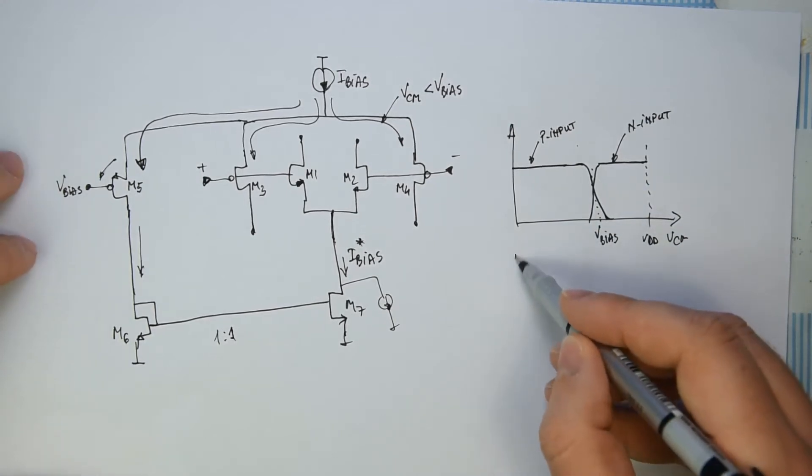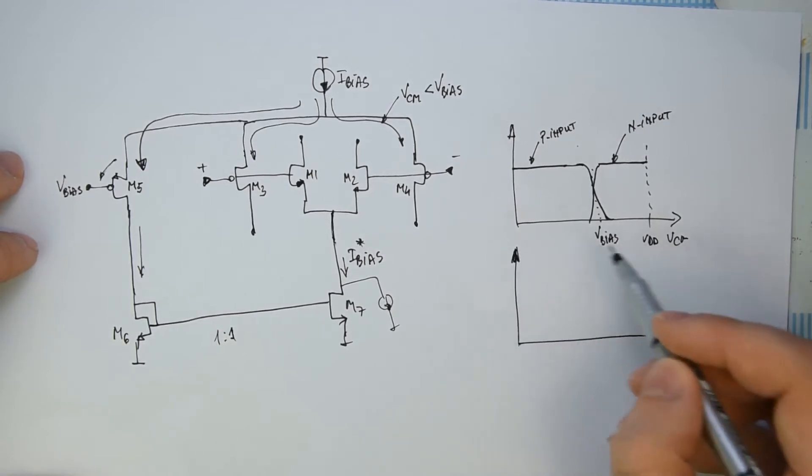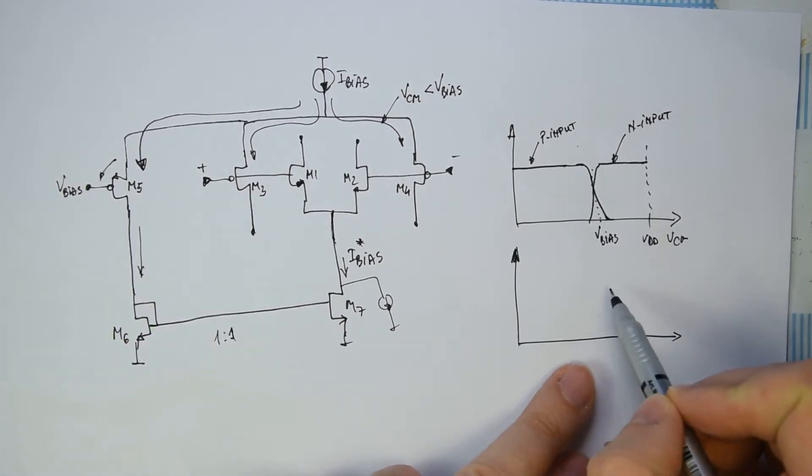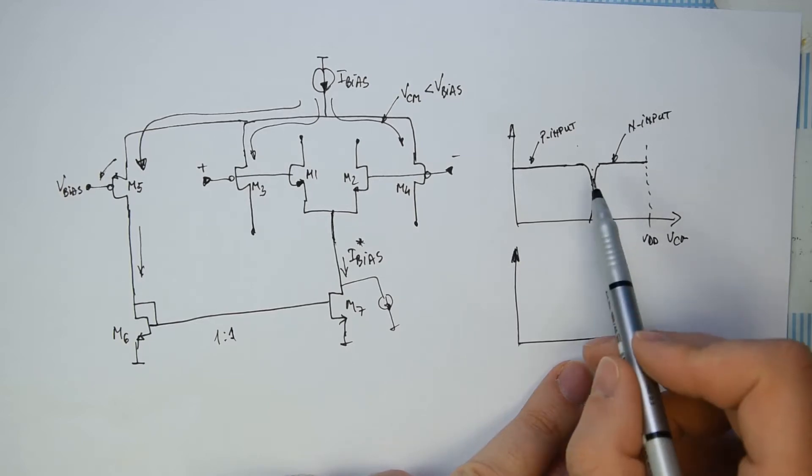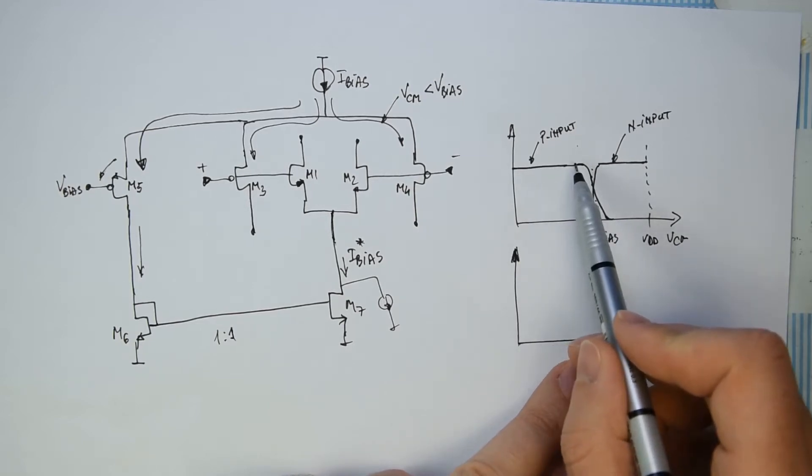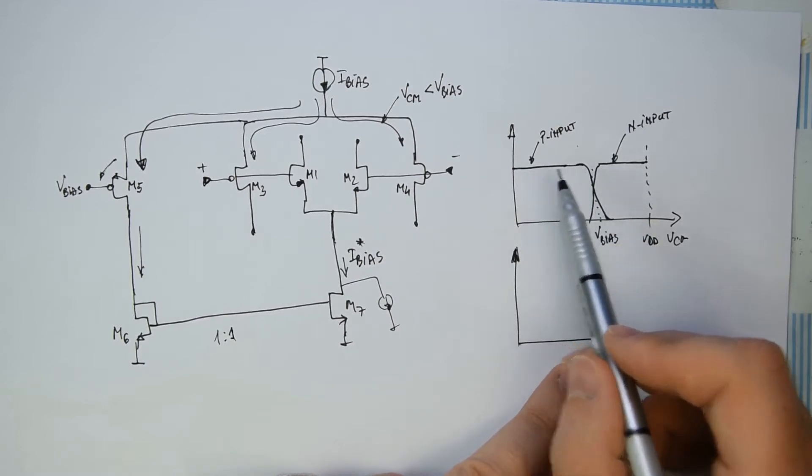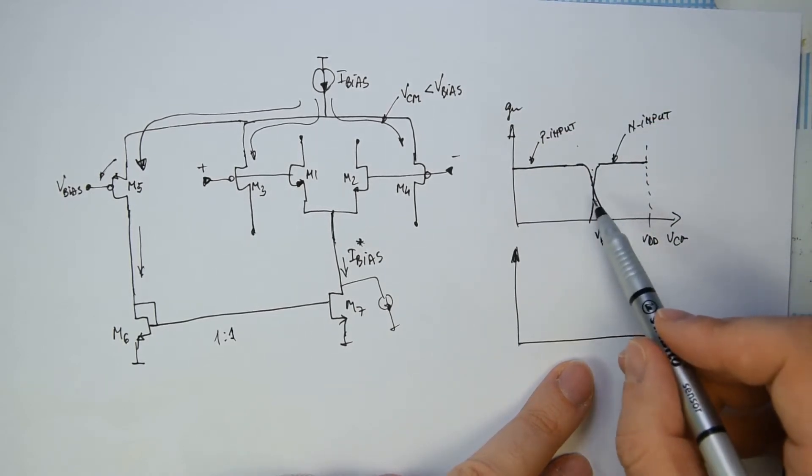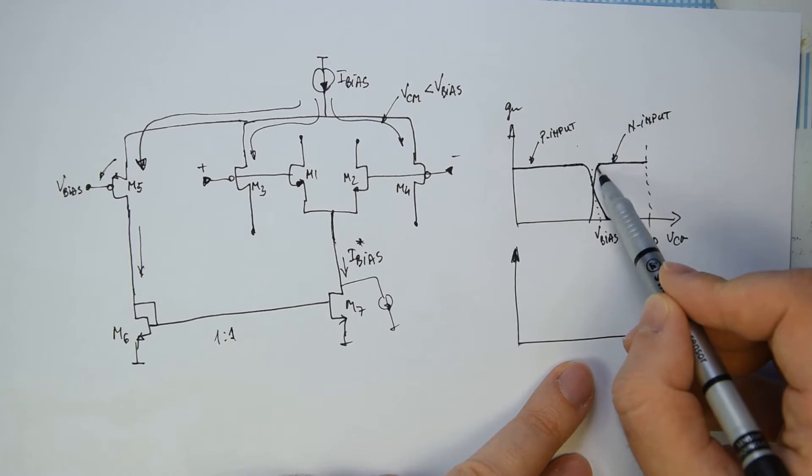And why is important? Simply because the fact that we have this liberty to choose the Vbias will give us the freedom to select if we want to be exactly in the middle, if we want to be somewhere on the upper side or at the lower side. Usually depends on the design, depends on the signal that we have on the input.